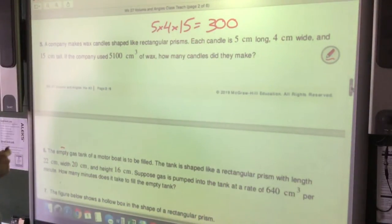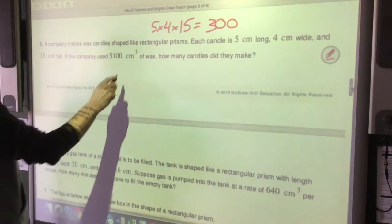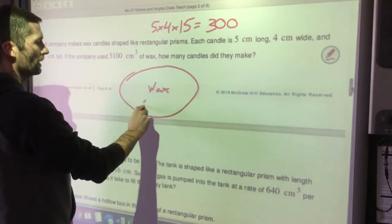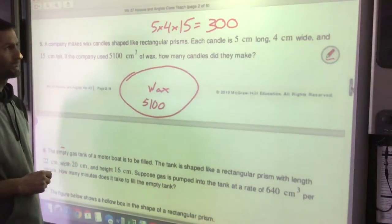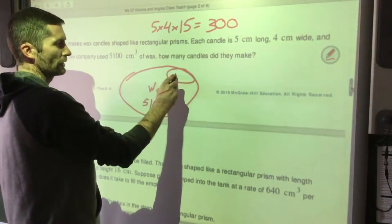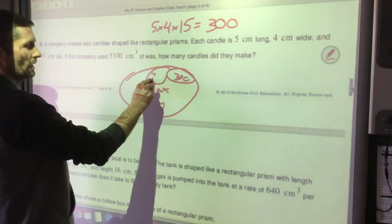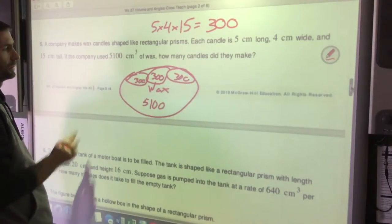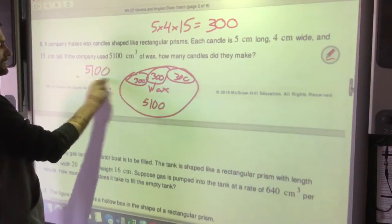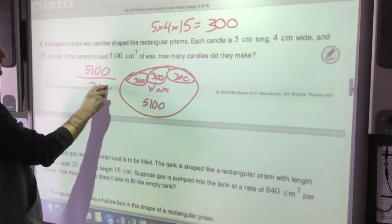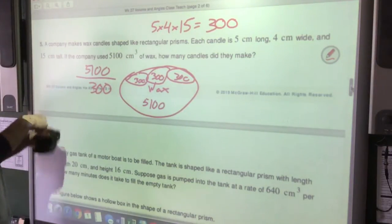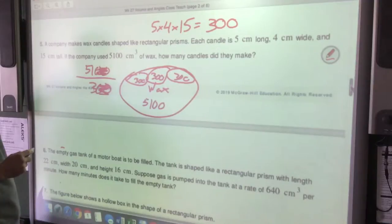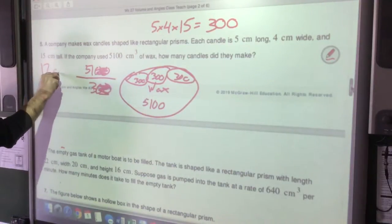Okay, so each candle is 300 cubic centimeters. We have 5,100 cubic centimeters of wax. Each candle is 300 of those. So what I'm doing is I'm seeing how many 300s, how many candles I can make out of 5,100. So we're doing 5,100 divided by 300. I can use my calculator for that. I can also see I'm going to divide them both by 100. 51 divided by 3 is 17. So I should be able to make 17 candles.